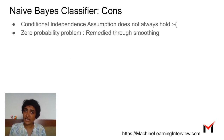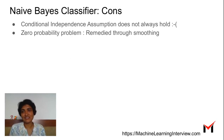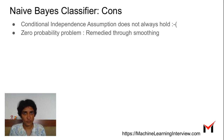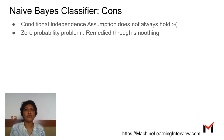One of the main disadvantages of Naive Bayes is that same conditional independence assumption, because most applications do not have this property. So it is rather a simplistic model to use in a lot of cases.